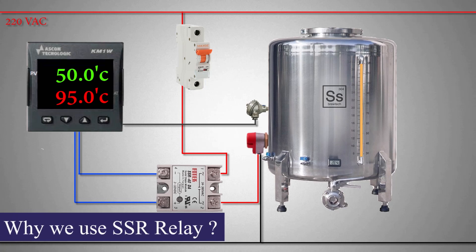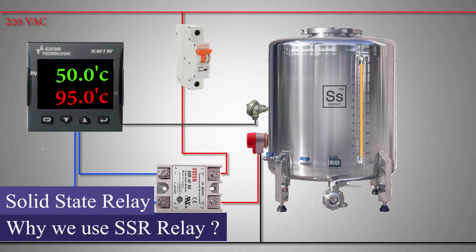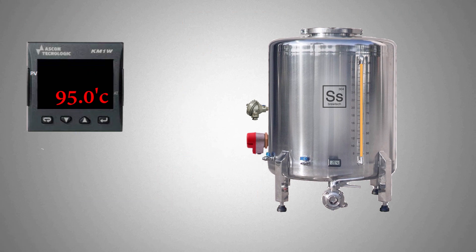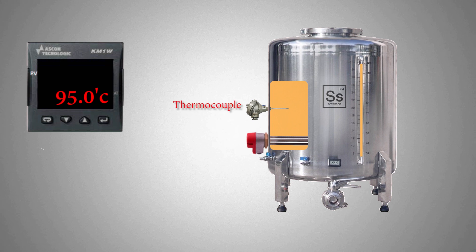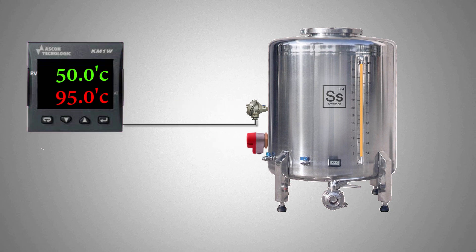Why do we use SSR or solid state relay? Let's see a scenario where we have a tank filled with some liquid. The task here is to heat the liquid inside the tank up to 95 degrees Celsius. A thermocouple is installed in the tank to monitor the temperature of the liquid. A heater is installed in the tank to heat up the liquid. We can monitor and control the temperature of the tank with the temperature controller. If we connect a thermocouple with the temperature controller, it starts to display the current temperature on the display.